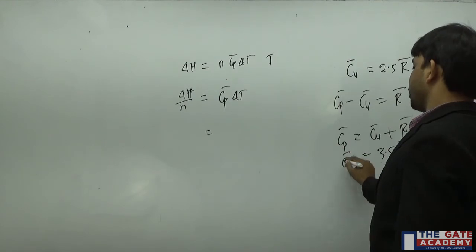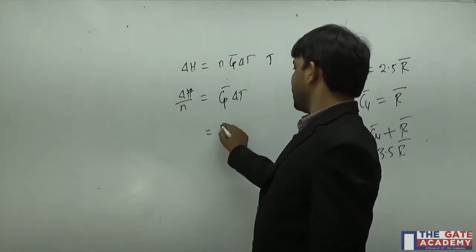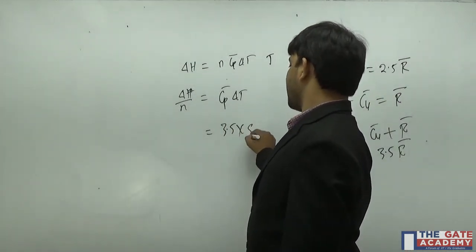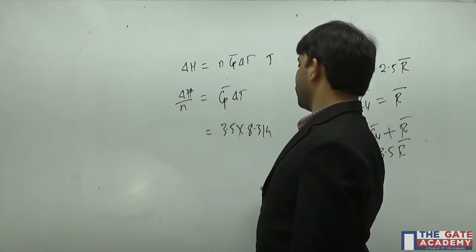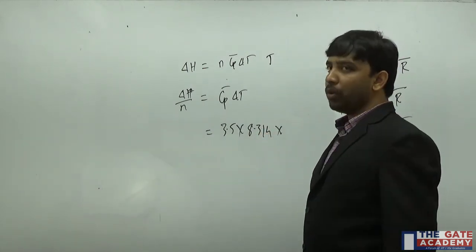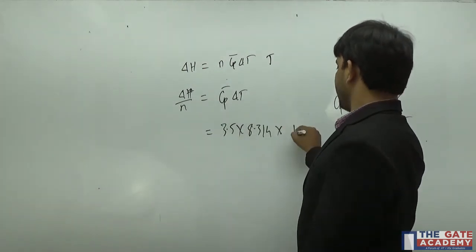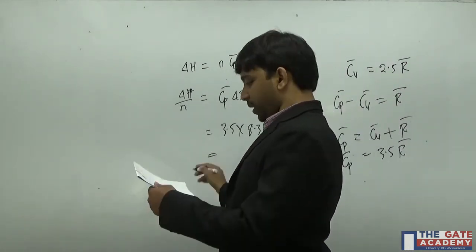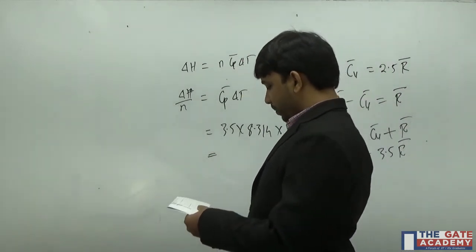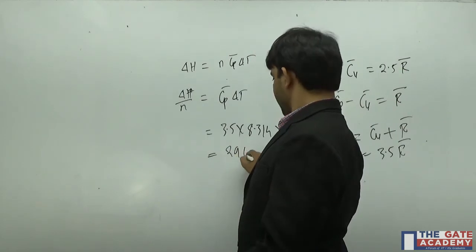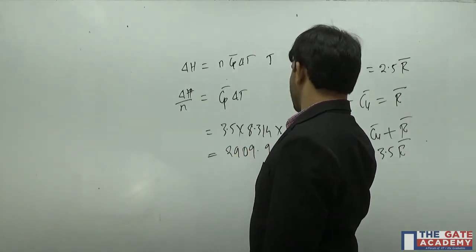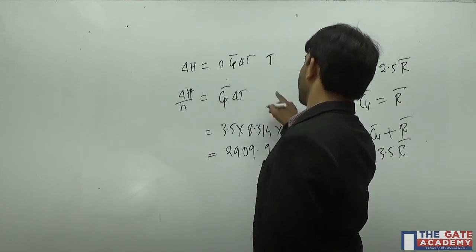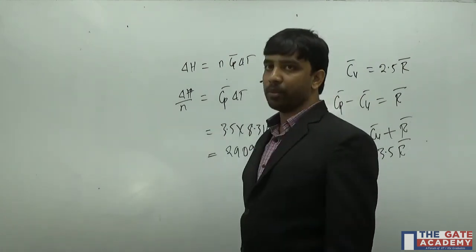This is your molar specific heat at constant pressure, 3.5 R bar, which is 3.5 times 8.314 kilojoules per kilomole Kelvin times ΔT, which is 100. If I simplify this, I get 2909.9 joules per mole.